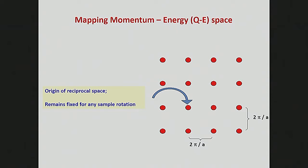When we do these inelastic scattering measurements for crystalline solids, we think about them in terms of maps in momentum transfer and energy transfer. The neutron transfers a certain amount of energy and a certain amount of momentum to the sample. The data set we get — momentum is a vector — would actually be four-dimensional for a single crystal: three momentum dimensions (X, Y, Z) and one energy transfer dimension.